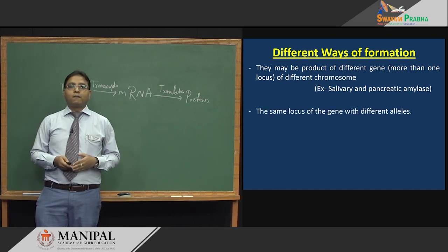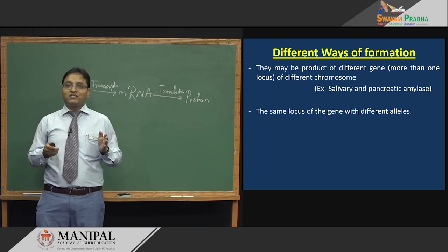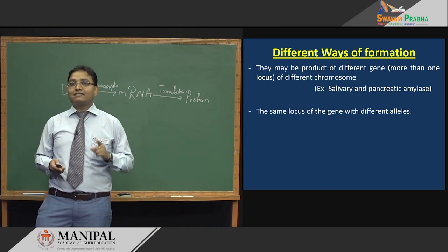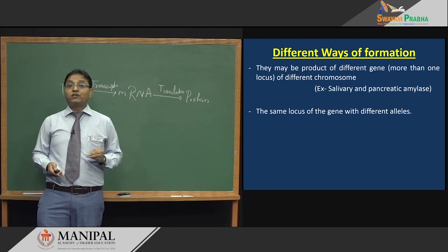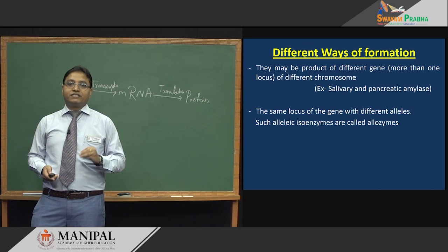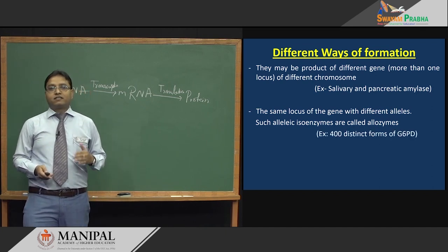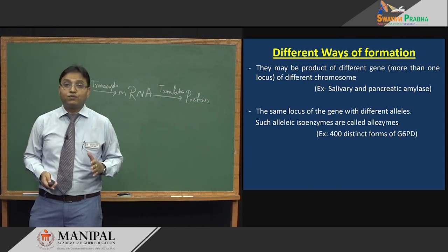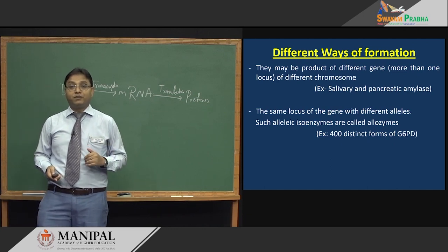The second way of formation is where the same locus of the gene is used but with different alleles. Different alleles are used to synthesize different isoforms or isoenzymes — these are called allelic isoenzymes, also known as allozymes. For example, G6PD (glucose-6-phosphate dehydrogenase) has 400 distinct isoenzyme forms.